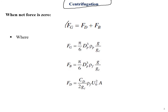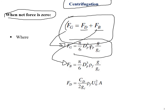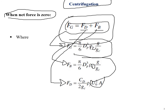Now for the derivation: since fg equals fd plus fb, when the net force is zero everything cancels out. The gravitational force fg can be written as (π/6) × dp³ × ρp × g / gc. Similarly, the buoyant force fb is (π/6) × dp³ × ρf × g / gc. The drag force fd is expressed as cd × (1/2gc) × ρf × u₀² × A.